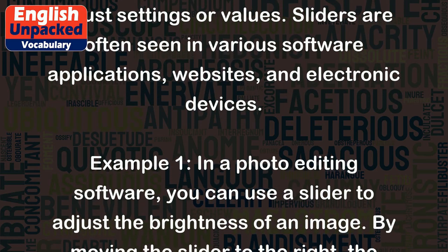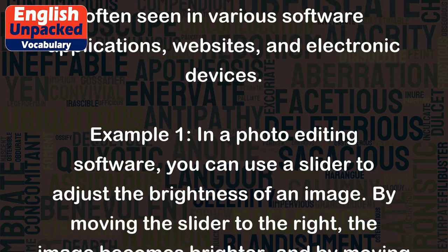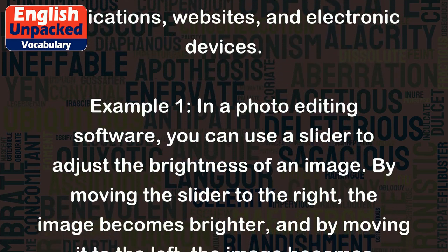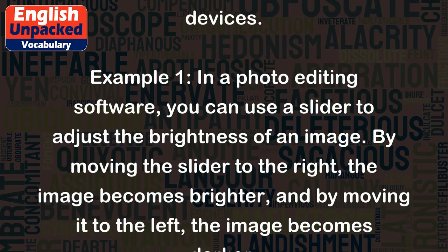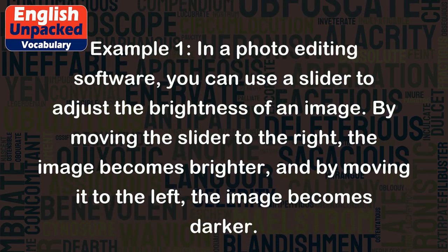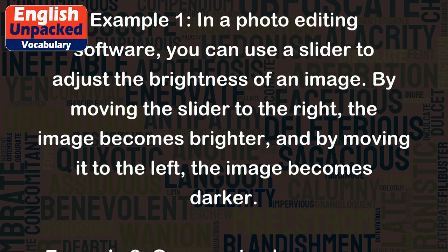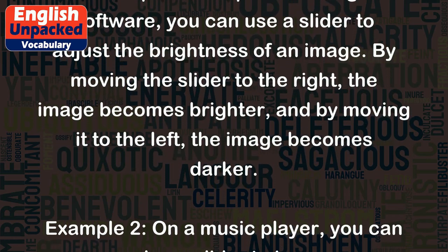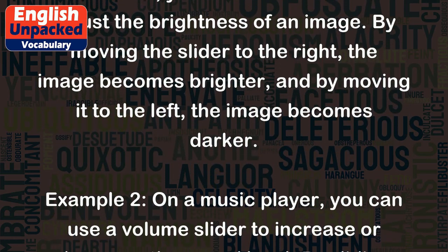Example 1. In a photo editing software, you can use a slider to adjust the brightness of an image. By moving the slider to the right, the image becomes brighter, and by moving it to the left, the image becomes darker.